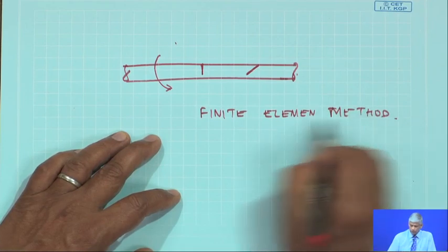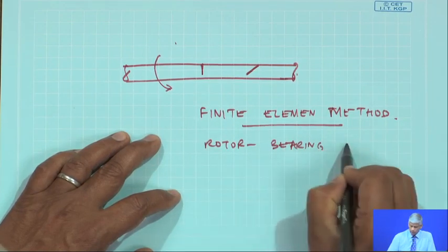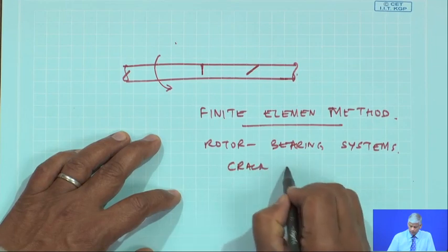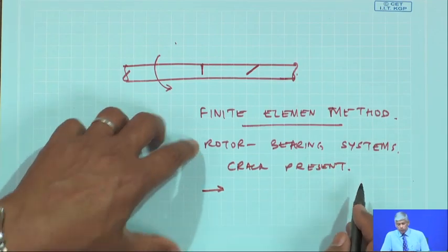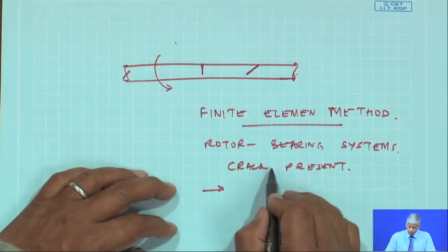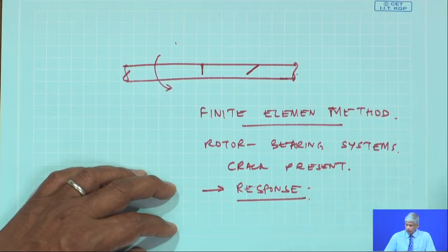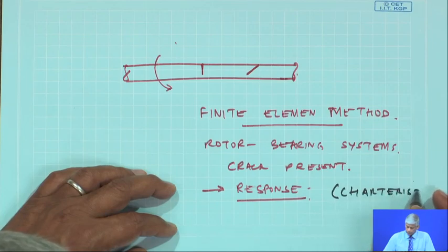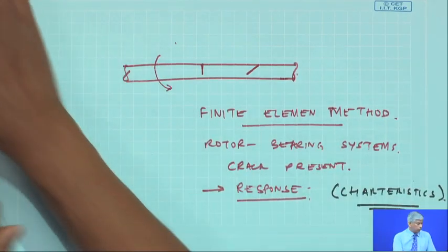People have analyzed rotor bearing systems with a crack present. They have done this for rotor bearing systems, as well as for beams and columns having cracks. It is the response which we measure from such systems, and the characteristics of this response give us a clue as to how bad or how good the shaft is in terms of crack.